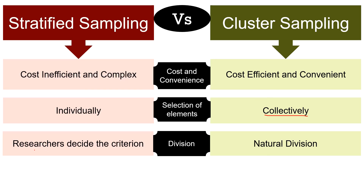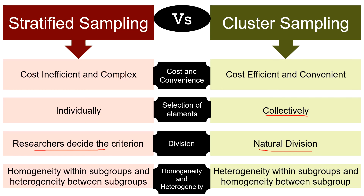Regarding division: in stratified sampling the researcher decides the criterion on the basis of which strata are divided, whereas cluster sampling depends on natural division. Regarding homogeneity and heterogeneity: in stratified sampling the researcher tries to secure homogeneity within subgroups and heterogeneity between subgroups, whereas in cluster sampling the researcher tries to secure heterogeneity within subgroups and homogeneity between subgroups — meaning different clusters are sought to be similar.